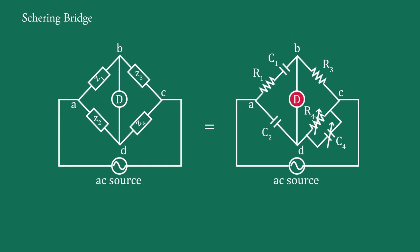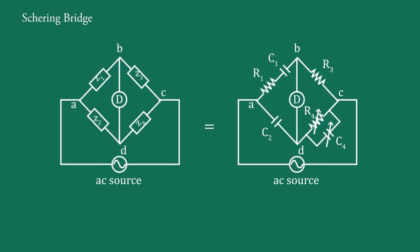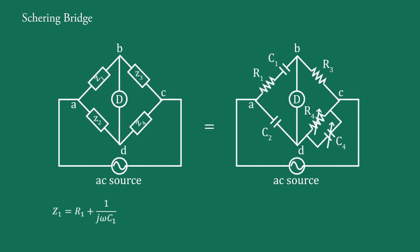Here, the detector is either a pair of headphones or a null detector, and there is an AC source. This bridge is used to measure capacitance C1 in terms of capacitance C2 and two resistances R3 and R4. In this circuit, C1 is the unknown capacitance having internal resistance R1; R3 and R4 are non-inductive resistances; and C2 and C4 are non-perfect capacitors. By comparing the two bridges, we find Z1 = R1 + 1/(jωC1) and Z2 = 1/(jωC2), Z3 = R3.